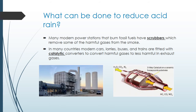Now that you know why acid rain is a problem, you might be wondering what is being done to control it. Regulations and new technologies are helping to reduce acid rain. Many modern power stations that burn fossil fuels have scrubbers, which remove some of the harmful gases from the smoke. In many countries, modern cars, lorries, buses and trains are fitted with catalytic converters to convert harmful gases to less harmful exhaust gases. This equipment has been used for over 20 years to reduce the amount of nitrogen oxides released by cars. Some new cars can also use cleaner fuels, such as natural gas.